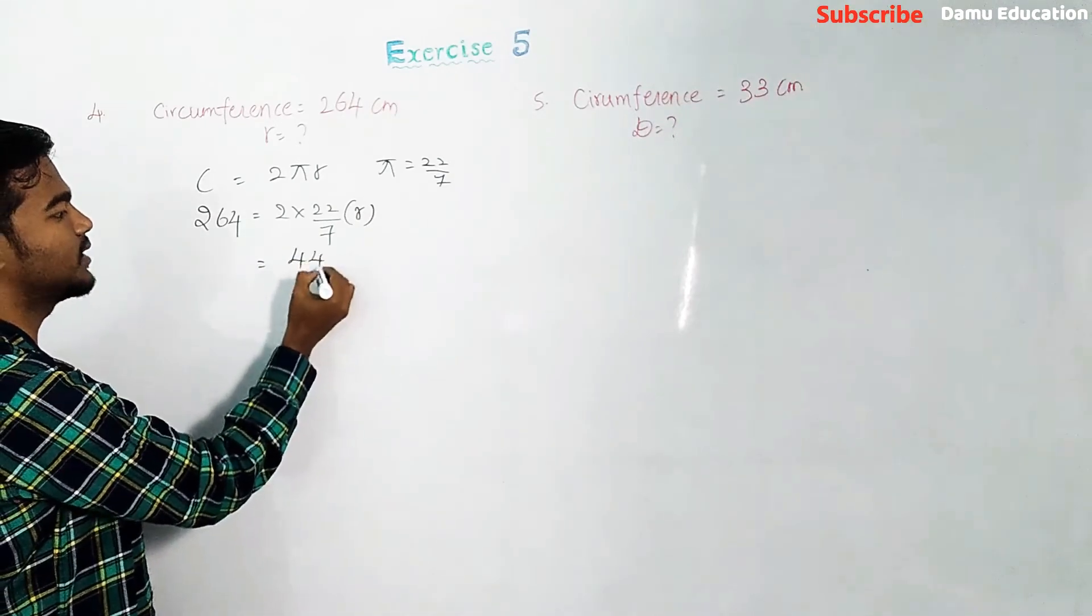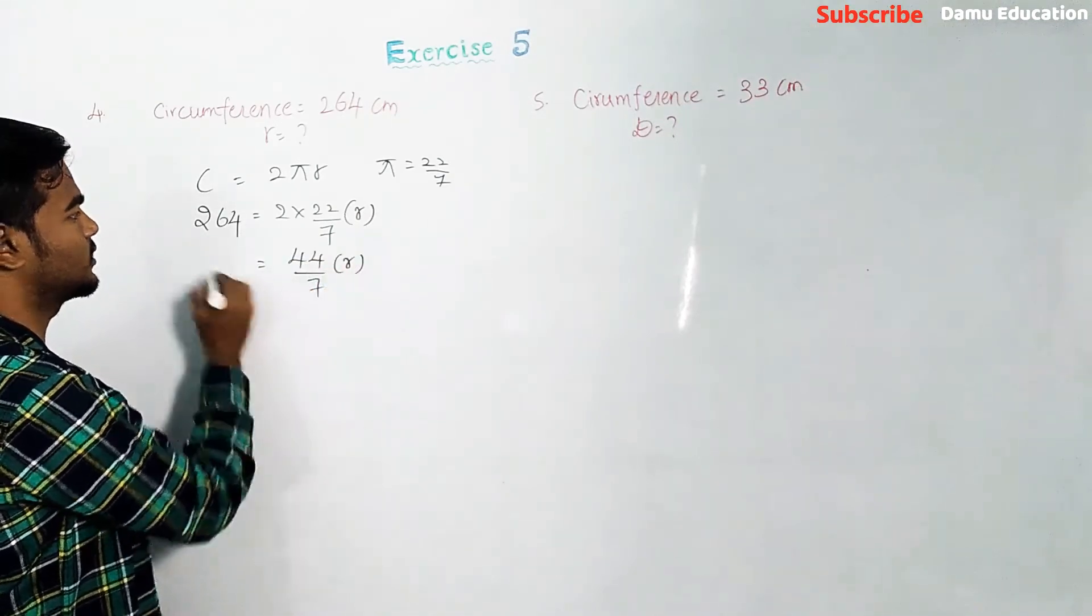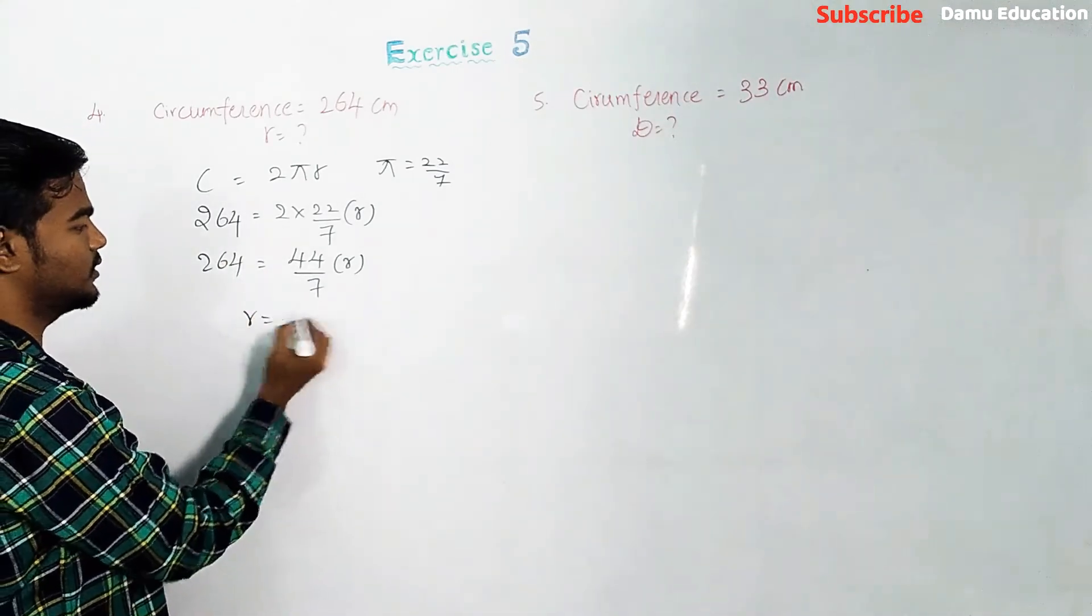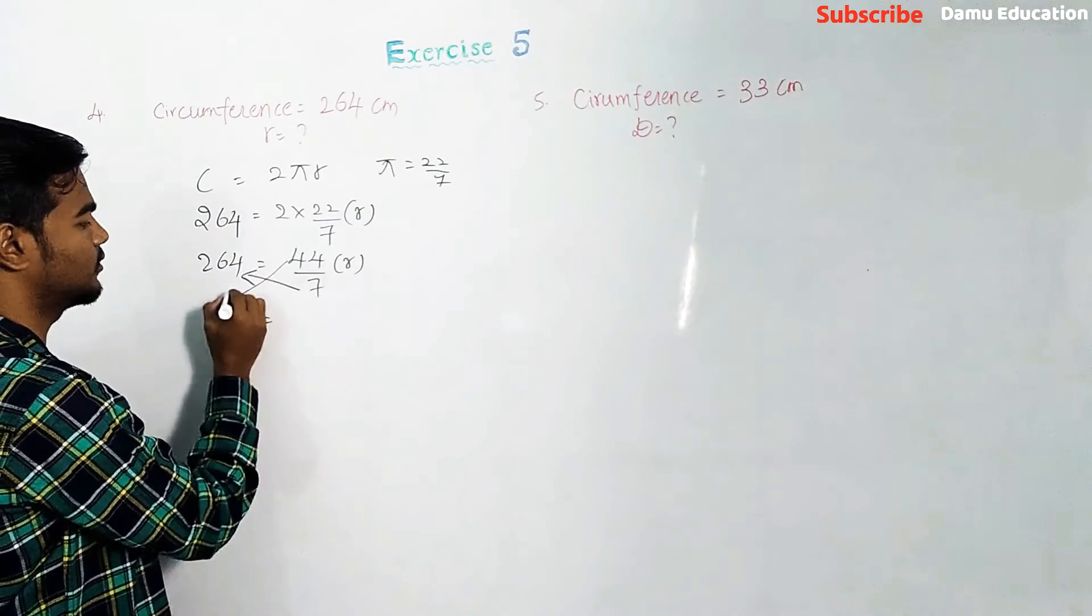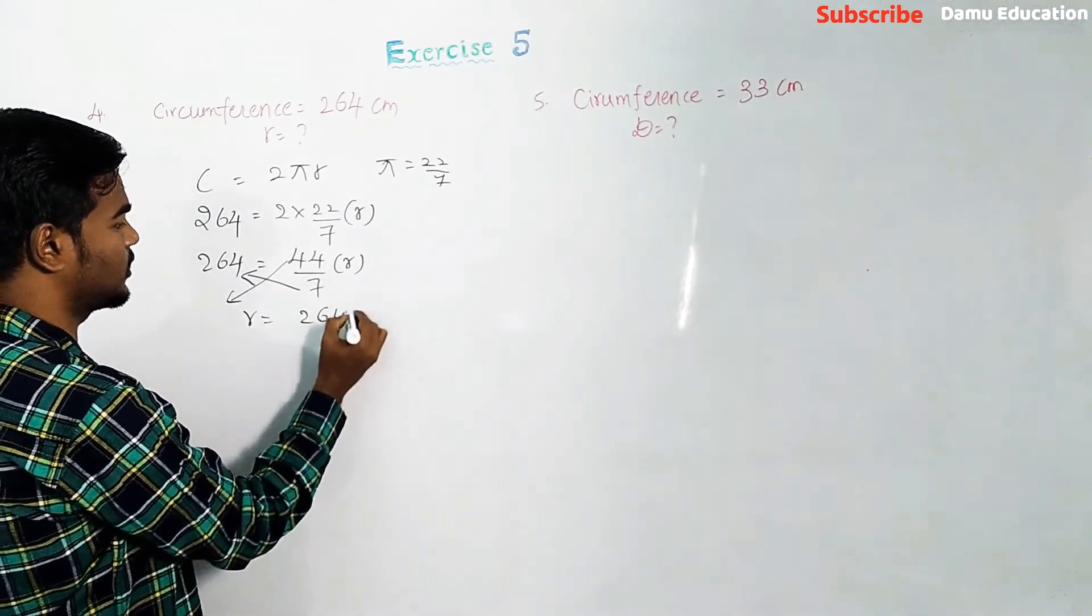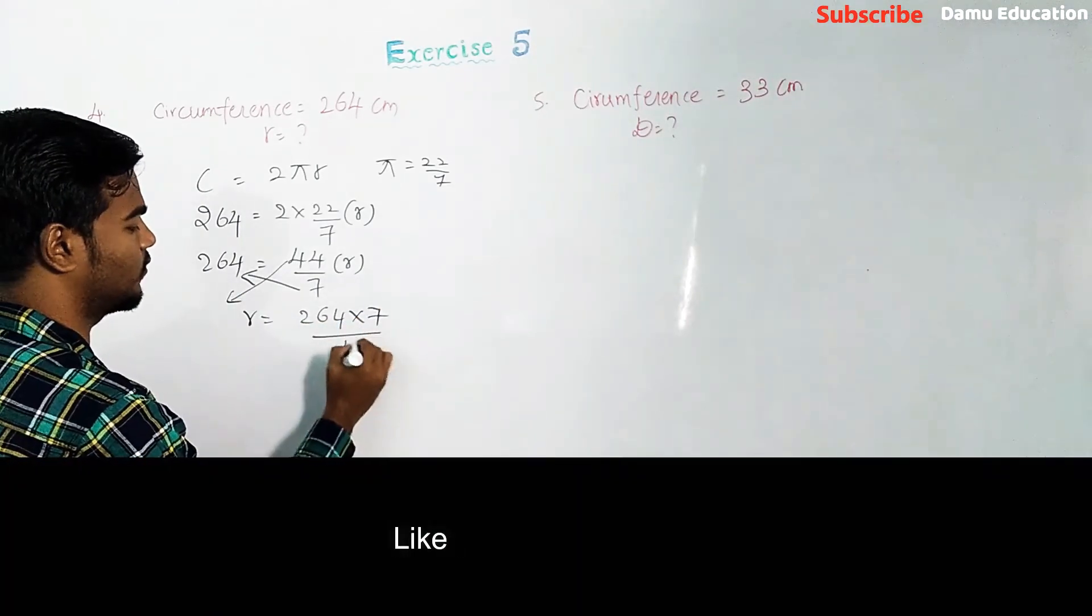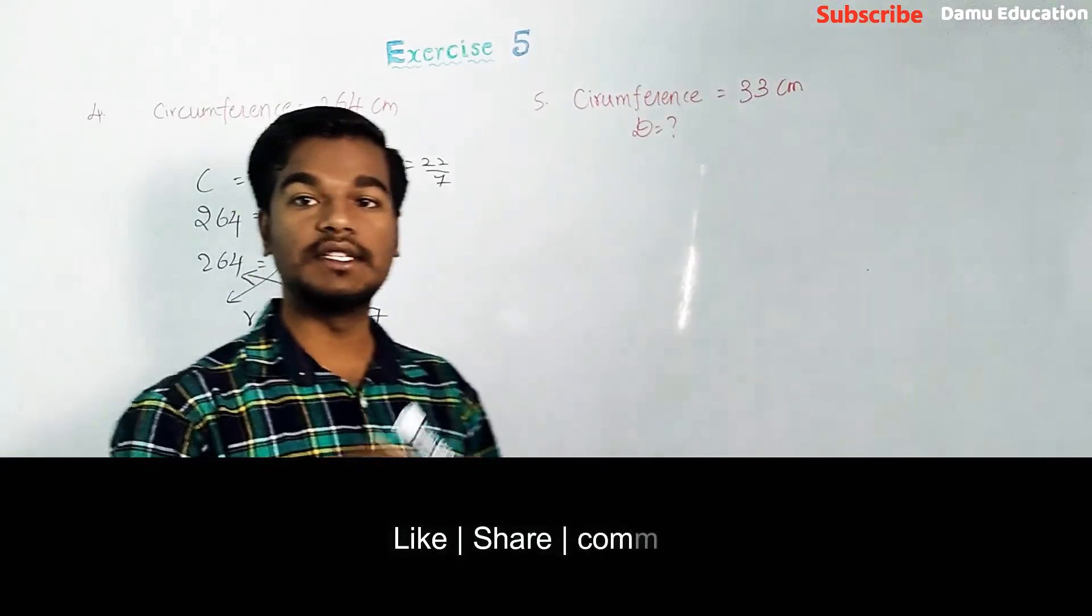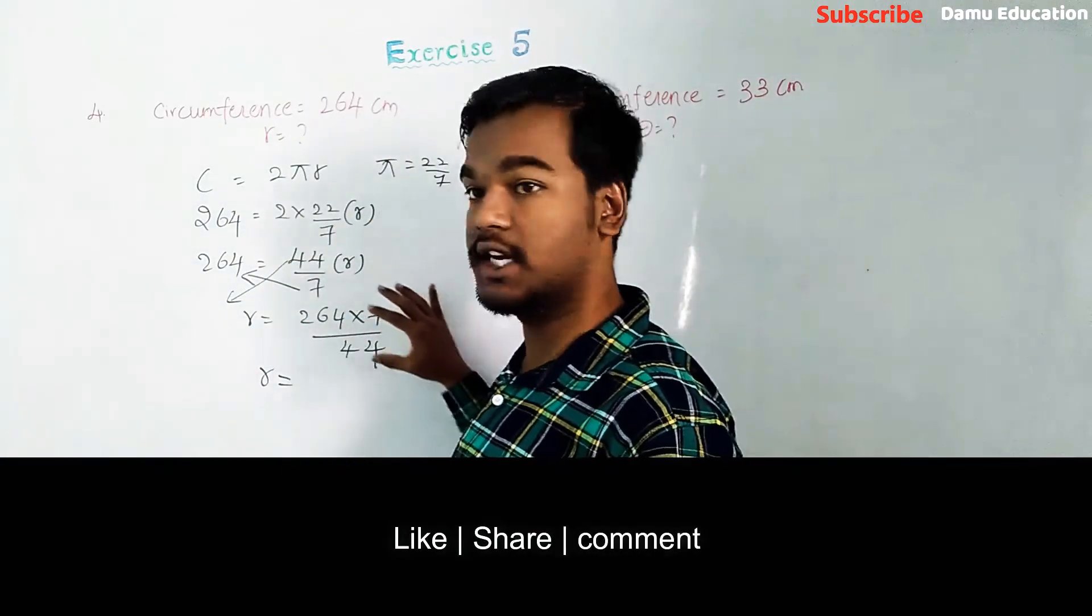Then what you can do is simply shift the radius to the other side like this: radius equals 264 into 7 by 44. Every time it's better to take all the values at one time and calculate with possible divisions, then simplify.